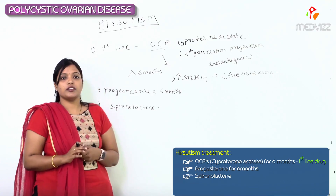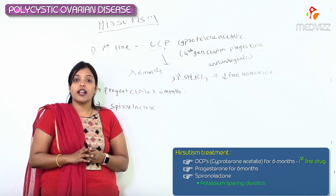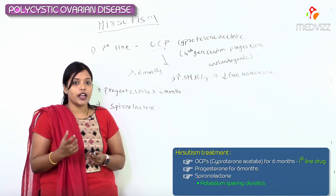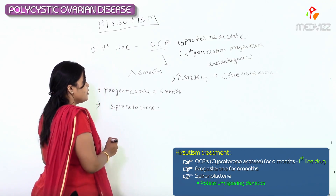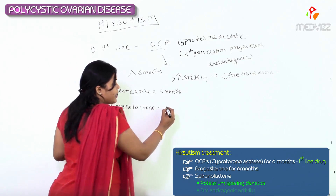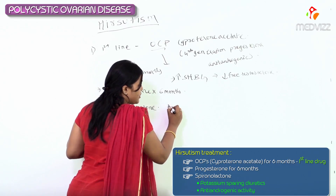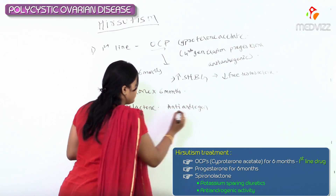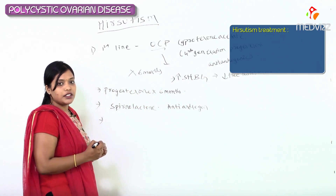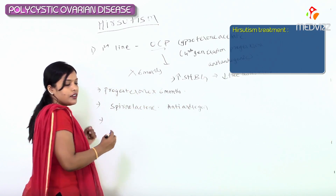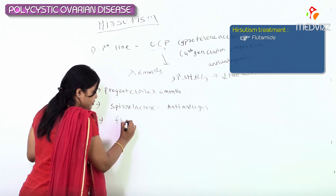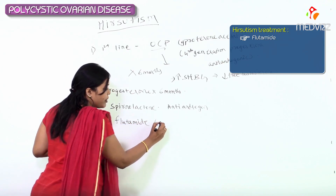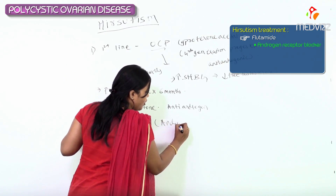The next drug is Spironolactone, which is a potassium-sparing diuretic. It also has anti-androgen action, which is why we use it here. After that, we have Flutamide, which is an androgen receptor blocker.